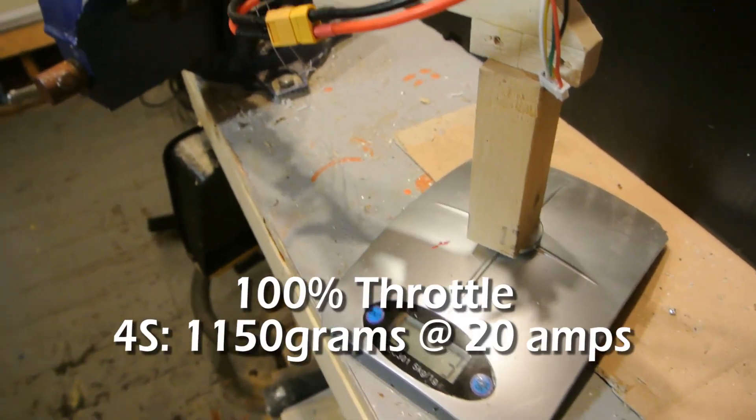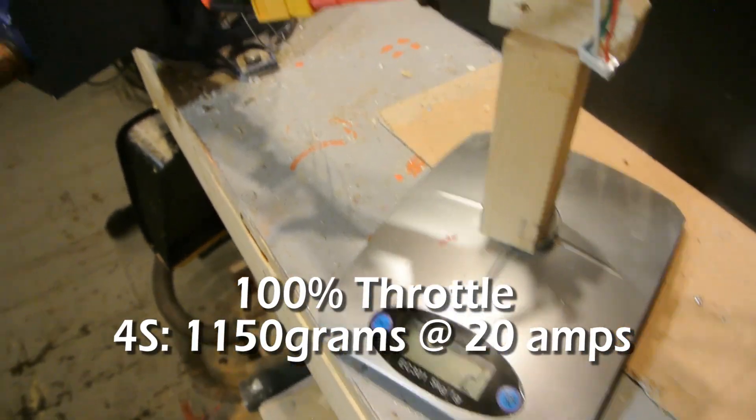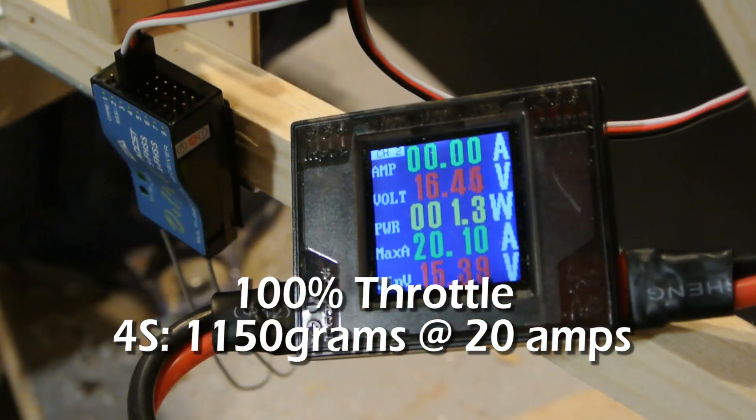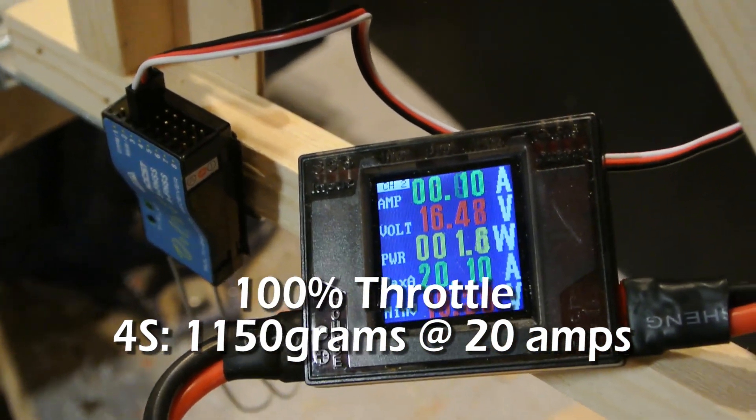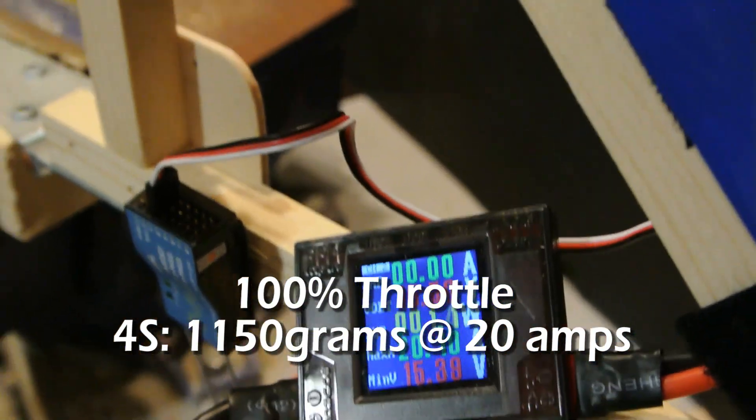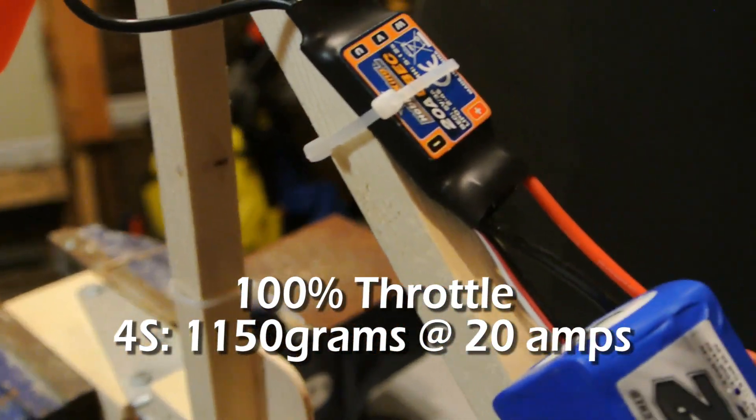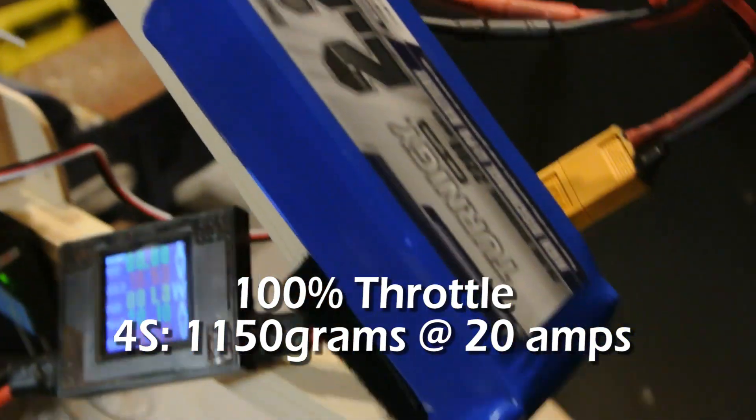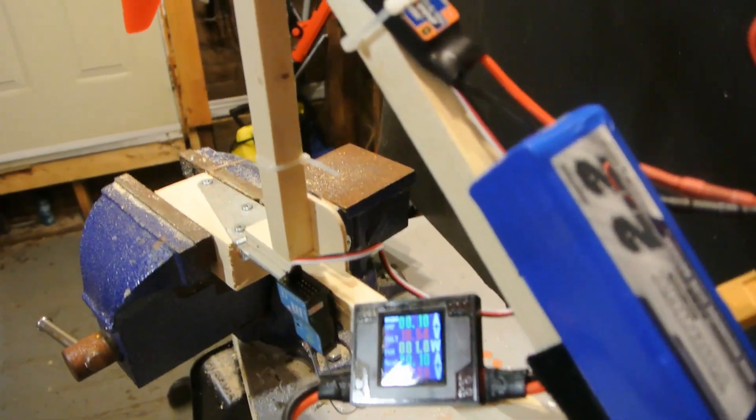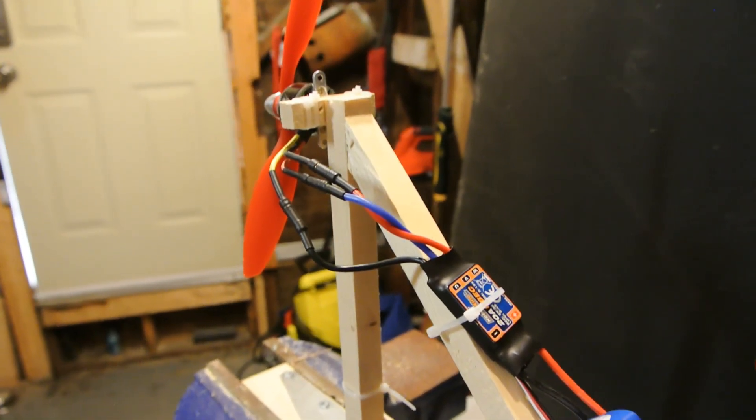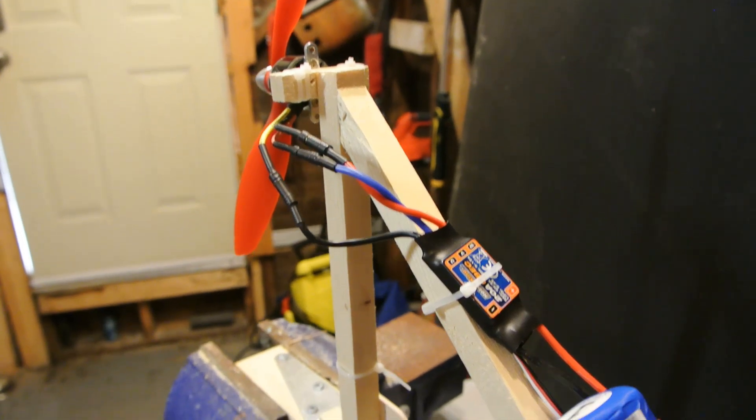So around 1,150 grams of thrust and we peaked out at 20 amps. So that tells me that we shouldn't be running this on a 20 amp ESC on 4S—that we're going to have to switch that over. Right now I'm running all 20s, but I have some 30s that I'll switch over to.